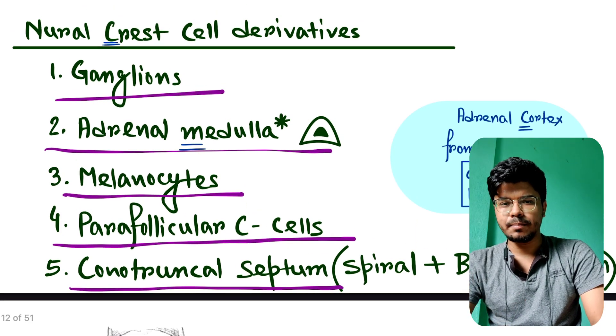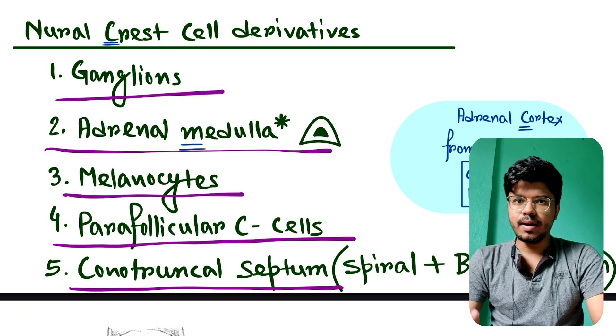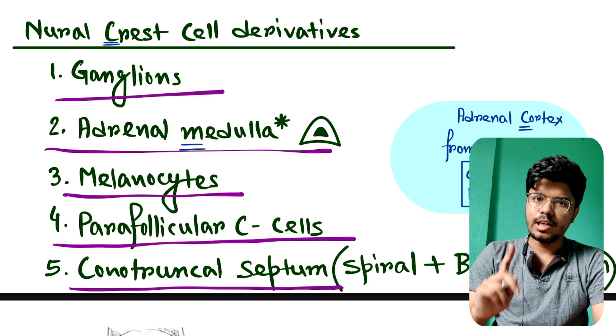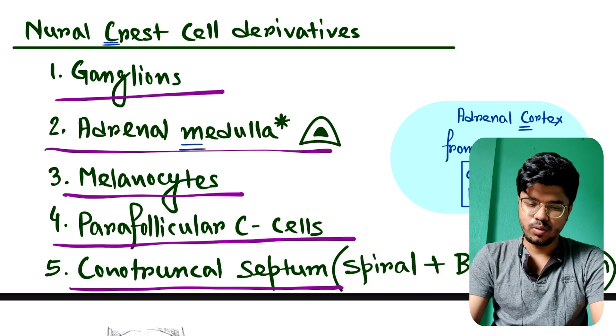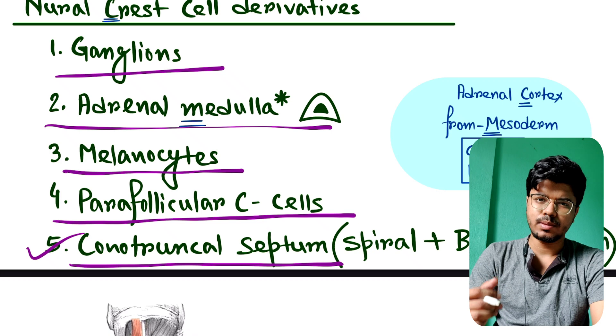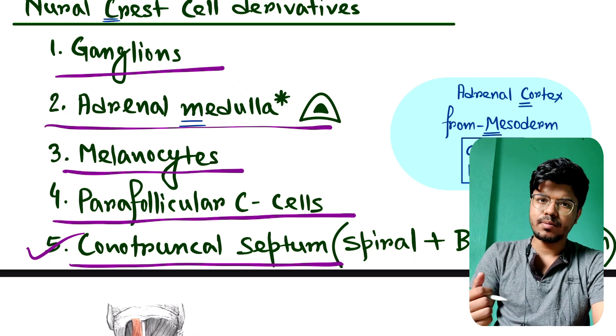Some books say parafollicular C cell is derived from ultimobranchial body, but if there are two options - ultimobranchial body and neural crest cell - please mark the answer neural crest cell. A few important facts about conotruncal septum: it's derived from neural crest cell and is spiraled in nature.